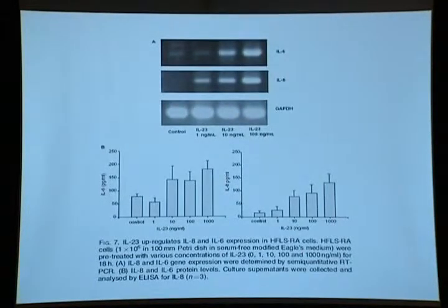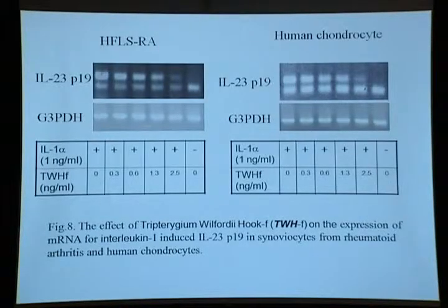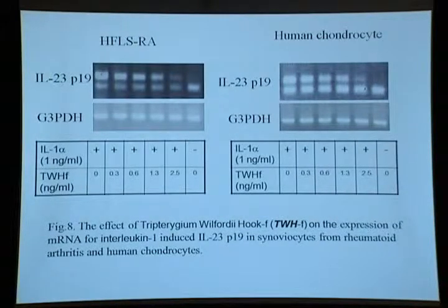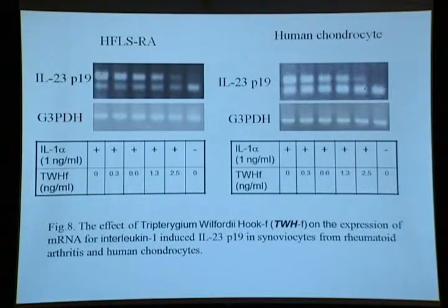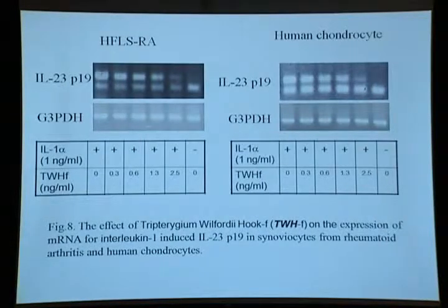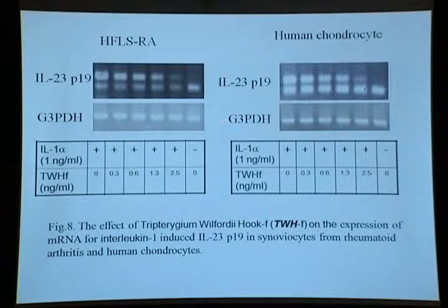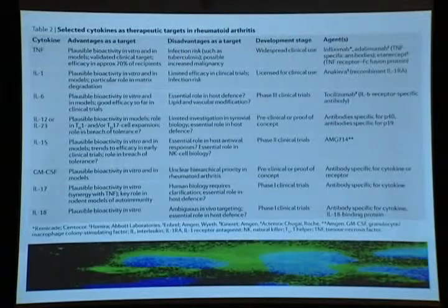We also want medicines to specifically block these pathways. We found a traditional Chinese herb called TWH (Tripterygium wilfordii Hook F) that can significantly inhibit IL-1 and reduce IL-23 expression in a dose-dependent manner.